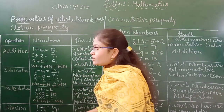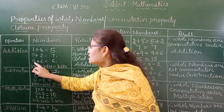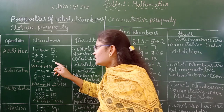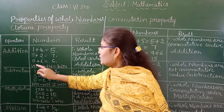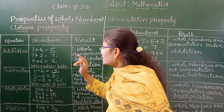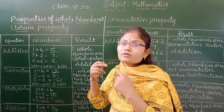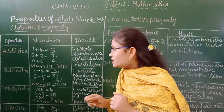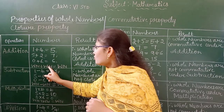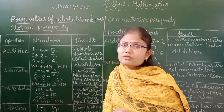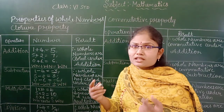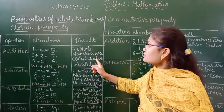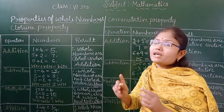If you add 0 and 6, you get 6. 0 is a whole number, 6 is a whole number, and the sum is also a whole number. So we conclude that if you add any two whole numbers, the sum is also a whole number — whole numbers are closed under addition.